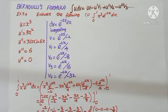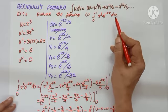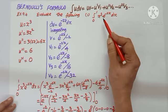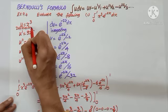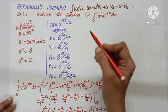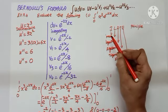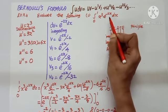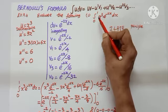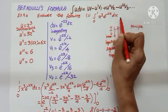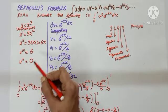Exercise 9.4 — evaluate the following. Integral from 0 to 1 of x cubed e power minus 2x dx. We need to choose u and dv. Whatever I choose as u, I differentiate; whatever I choose as dv, I integrate. Checking ILATE: inverse is not present, logarithm is not present, but algebraic is present — x powers. So take x cubed as u, and the remaining e power minus 2x dx as dv.